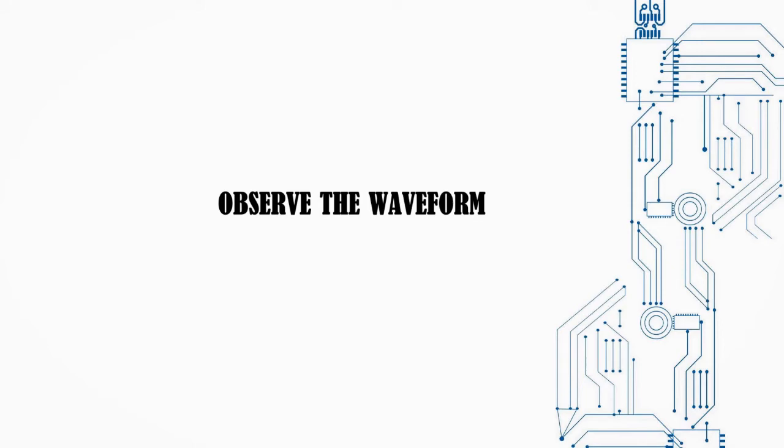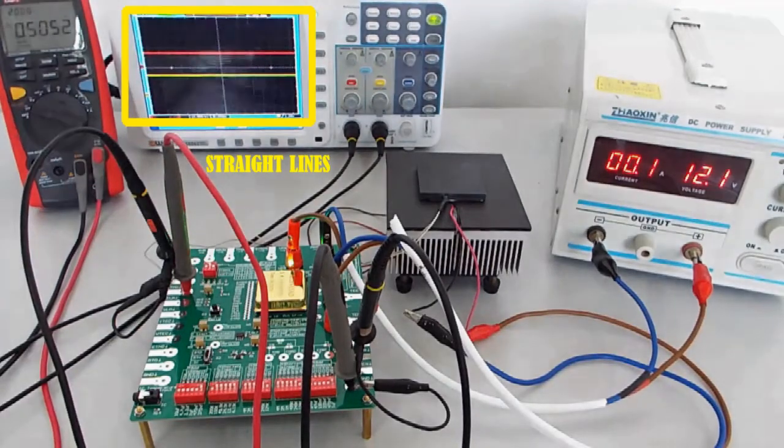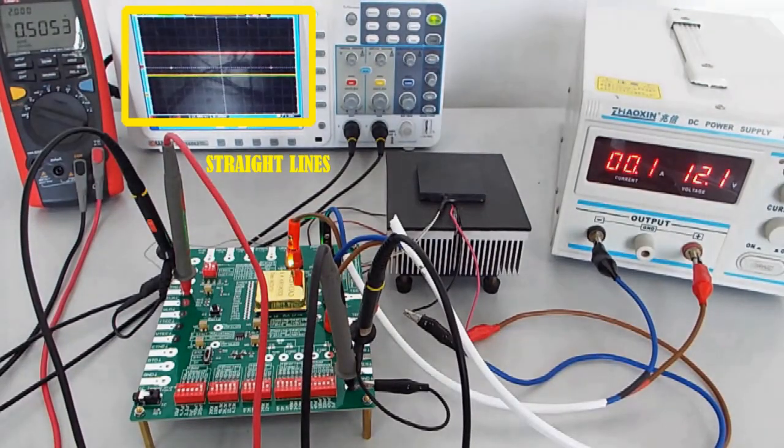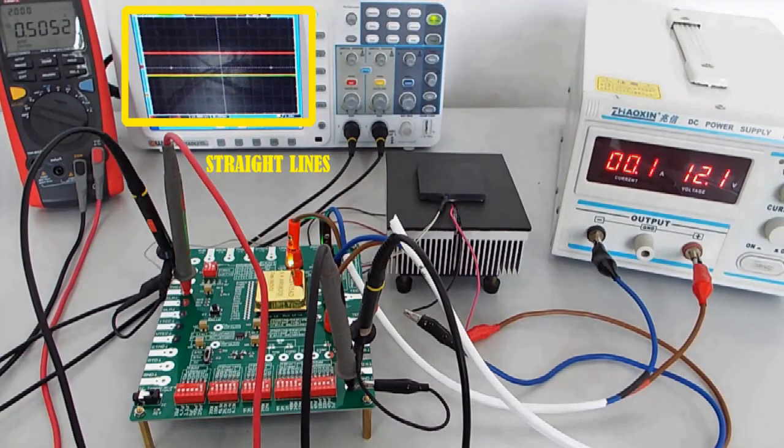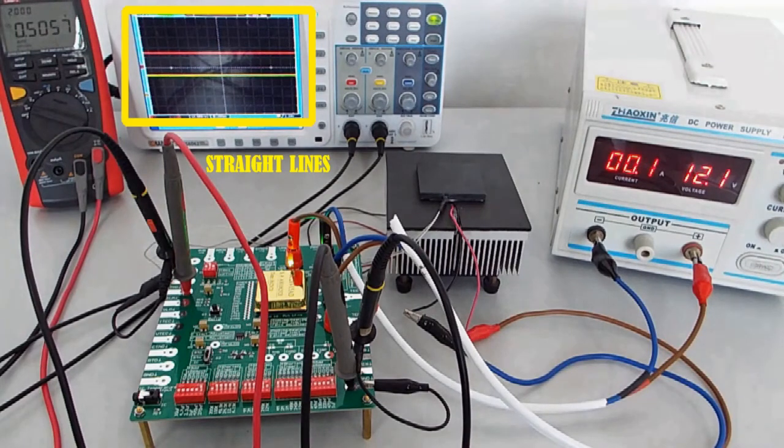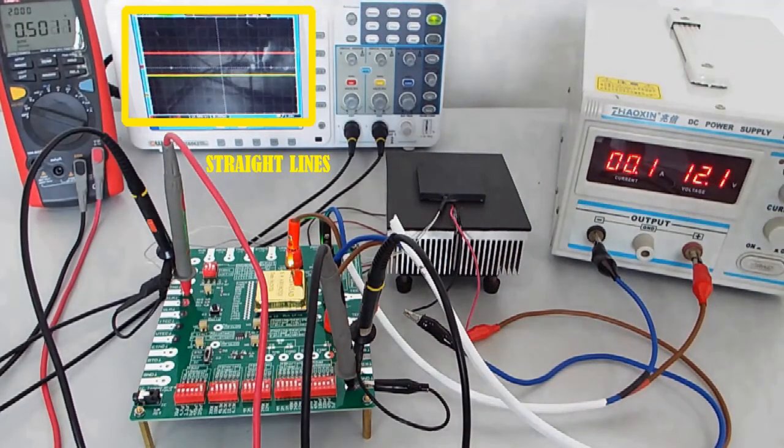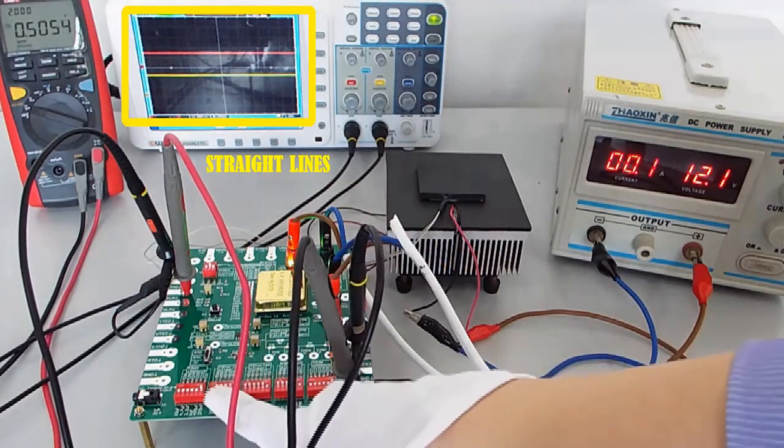Observe the waveform. Connect the two probes of the oscilloscope to TMO and IDR pins respectively. You can see the waveforms of these two pins on the oscilloscope. If the waveforms are all straight lines, it is good. If they are not straight lines, adjust the compensation network below.